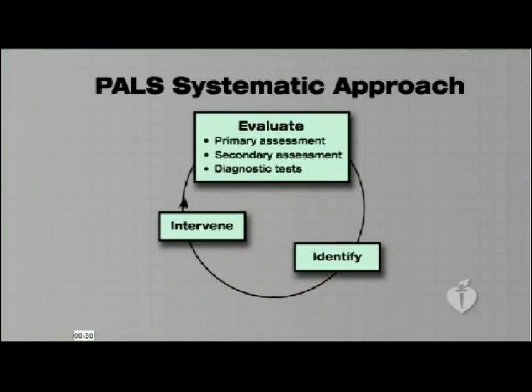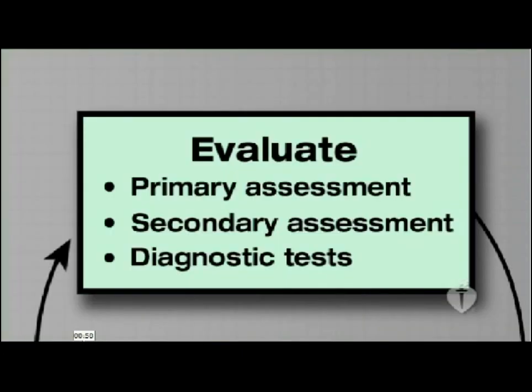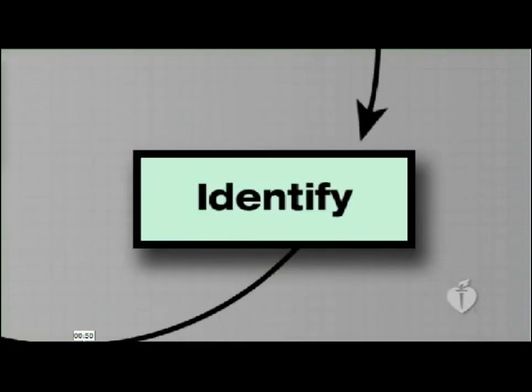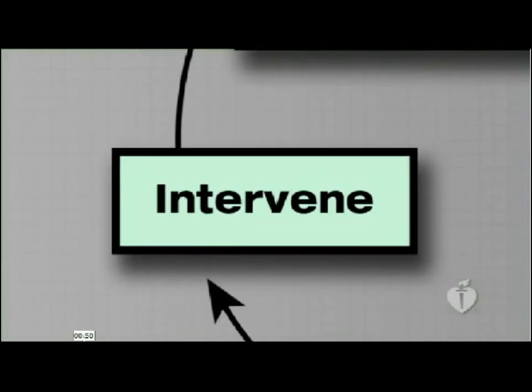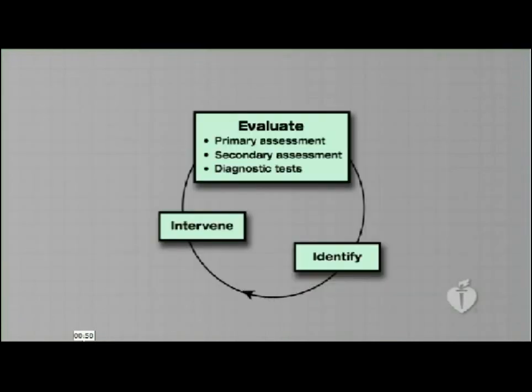Use the evaluate, identify, intervene sequence when caring for a seriously ill or injured child. This will help you determine the best treatment or intervention at any point. From the information gathered during your evaluation, identify the clinical condition of the child by type and severity. Intervene with appropriate actions, then repeat the sequence — this process is ongoing.